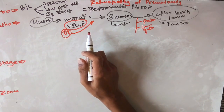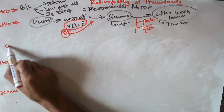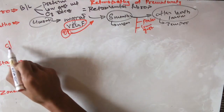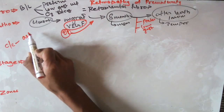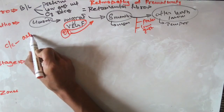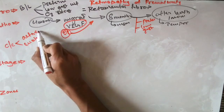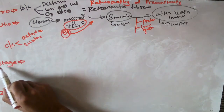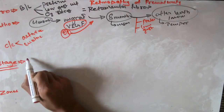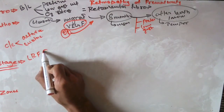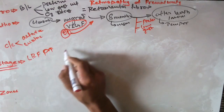Coming to the clinical features — there are two types of retinopathy of prematurity: the active type and the cicatricial type. The most common is the active type. We can divide the stages of the active type using the mnemonic L-R-F-P-T.